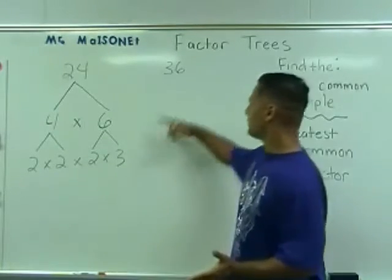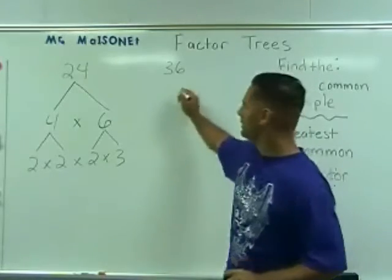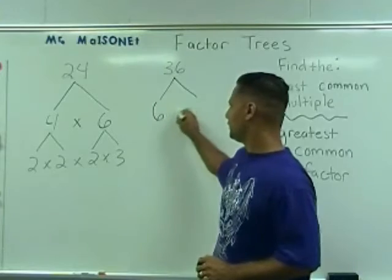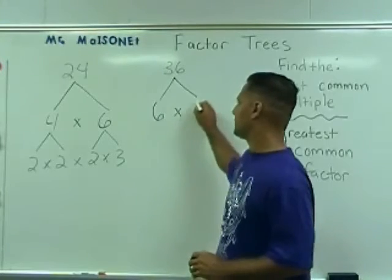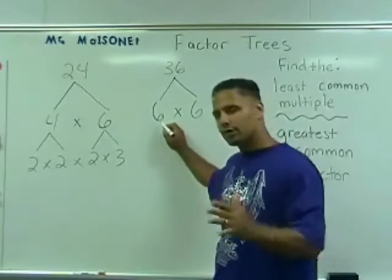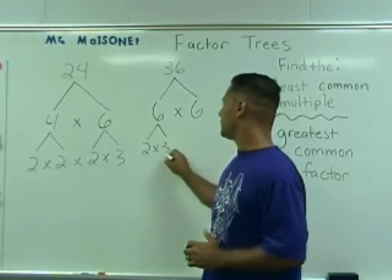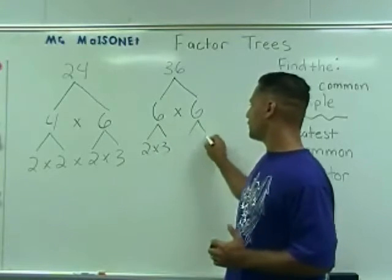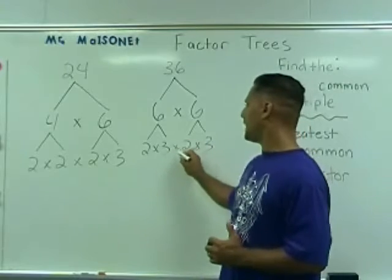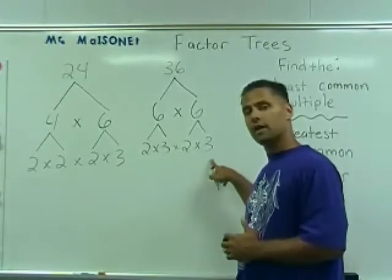So let's move over to the number 36. Let's do a factor tree of the number 36. Two numbers that can produce 36 would be 6 times 6. Then 6 can be broken down into 2 times 3, and this other 6 we also break down into 2 times 3. Now in the bottom row we have all prime numbers.